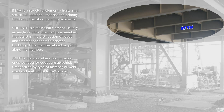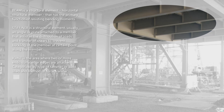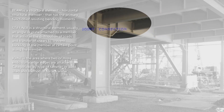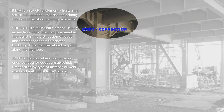A stiffener is a structural element, usually an angle or plate, attached to a member that assists in the distribution of loads and transfer of shears to prevent buckling of the member at certain points. A joint is the area where two or more ends, surfaces, or edges are attached, categorized by the type of fastener or weld used and method of force transfer.